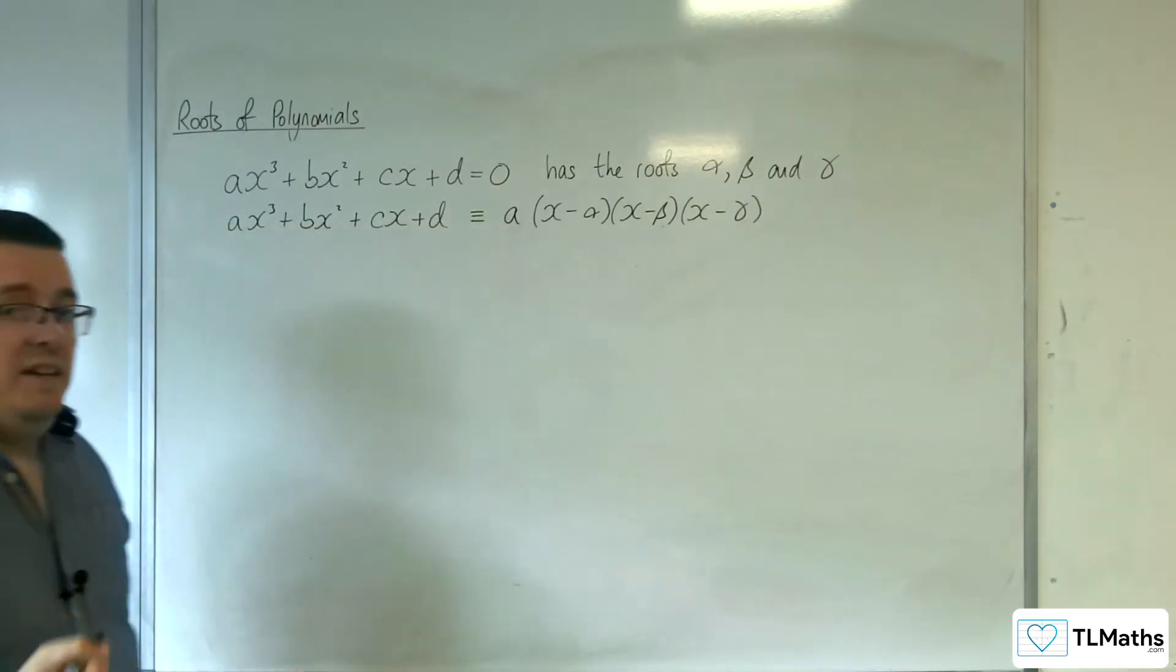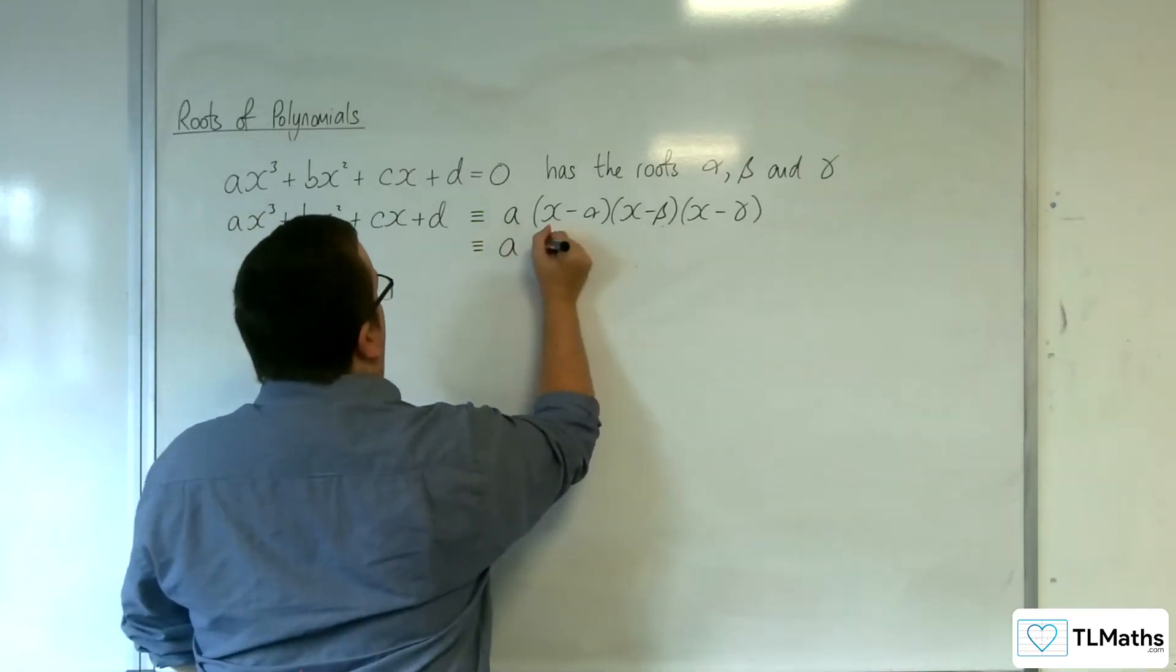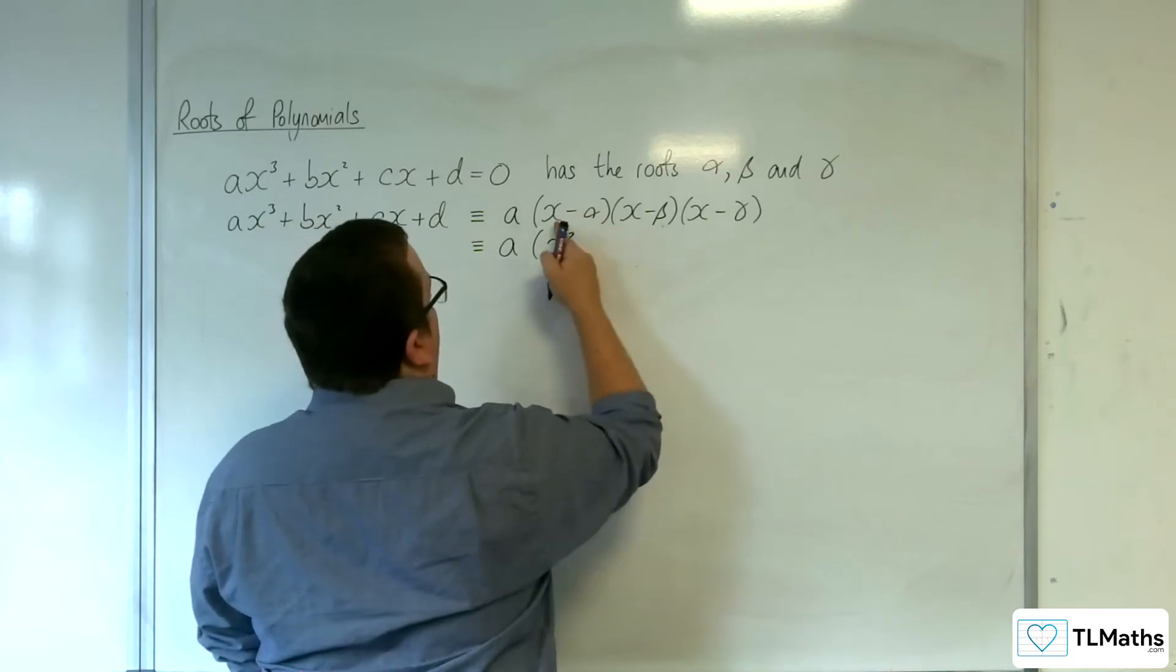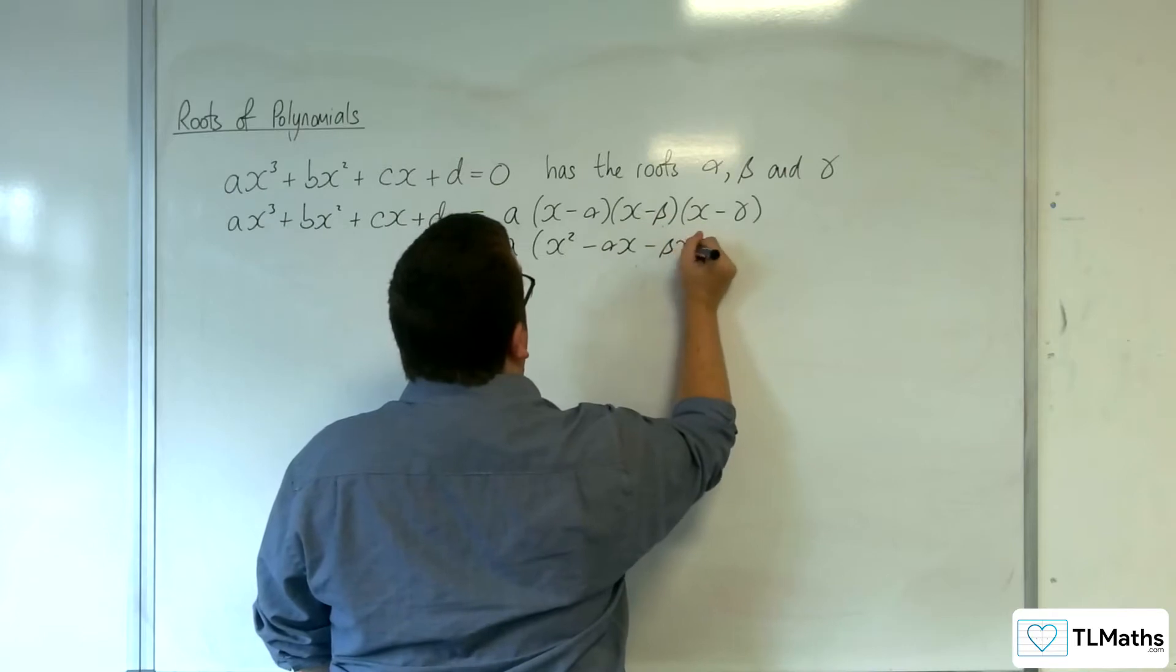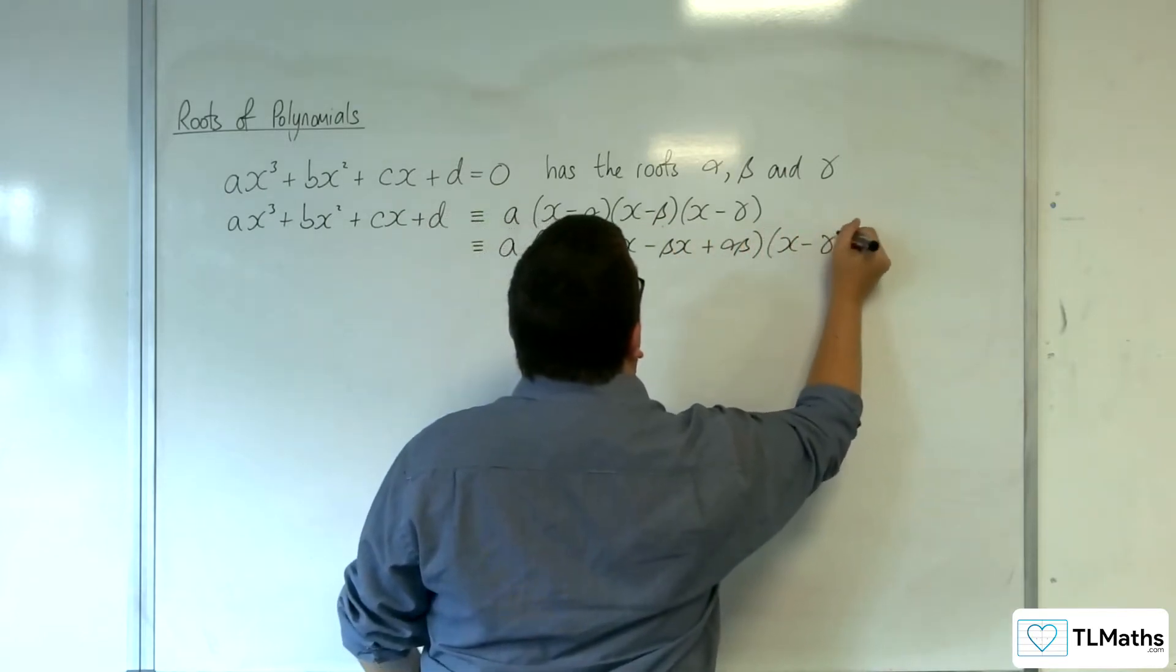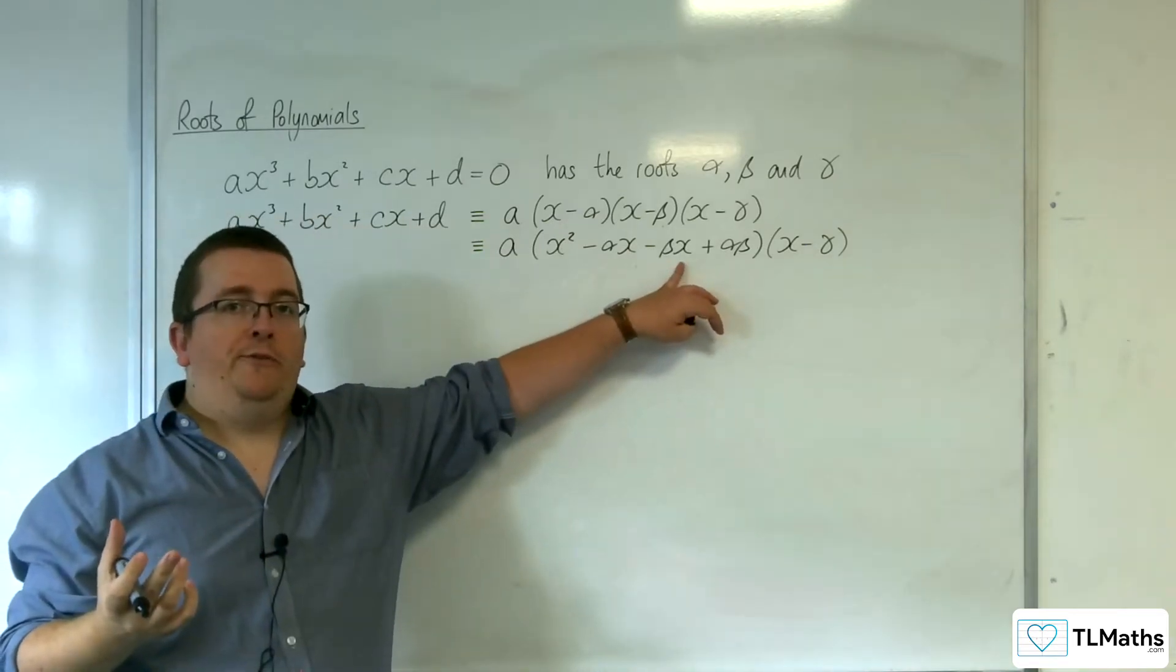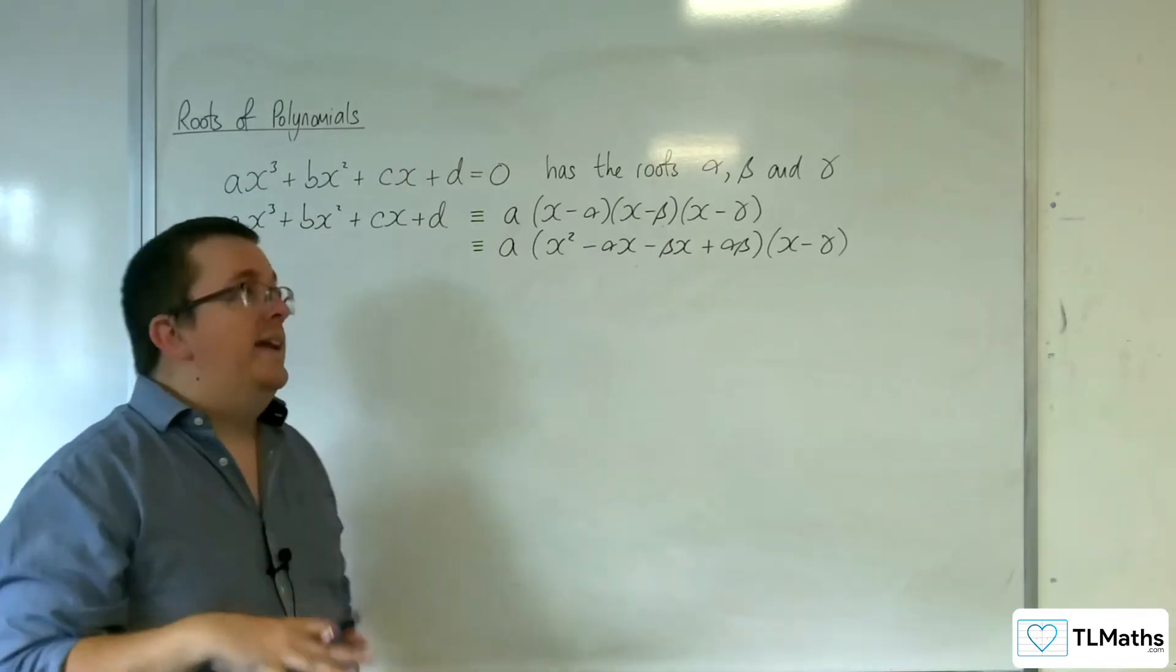I'm going to need to expand these three brackets out. We've got a times, so I'm going to expand the first two. We're going to get x² - αx - βx + αβ times (x - γ). There's a reason why I'm not going to factorize that at this point. I'm going to factorize it all in one go when I get to the end.